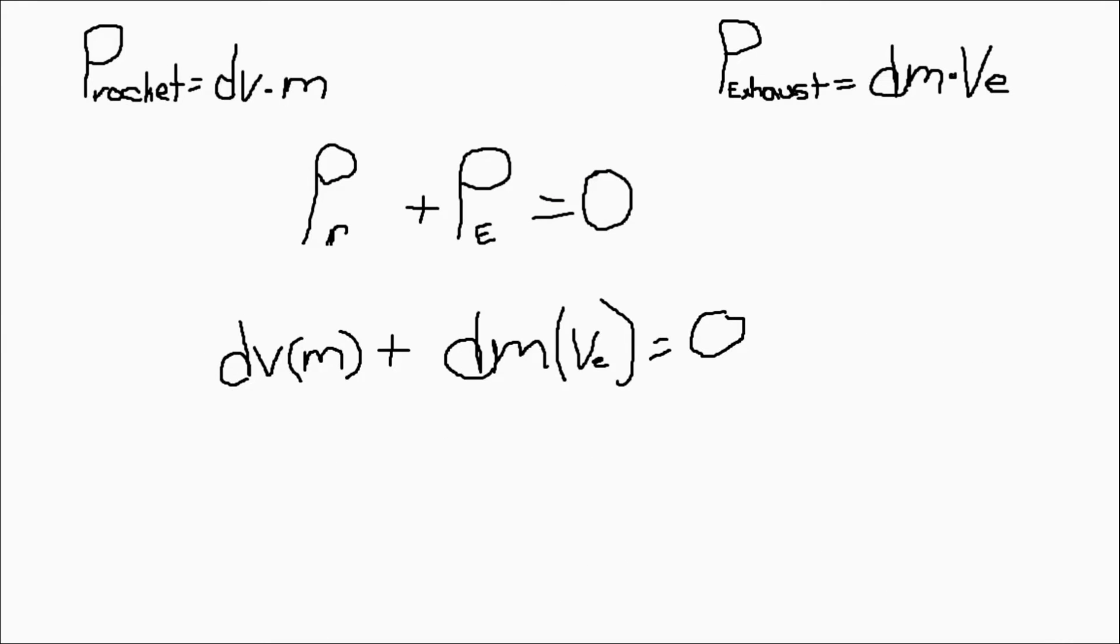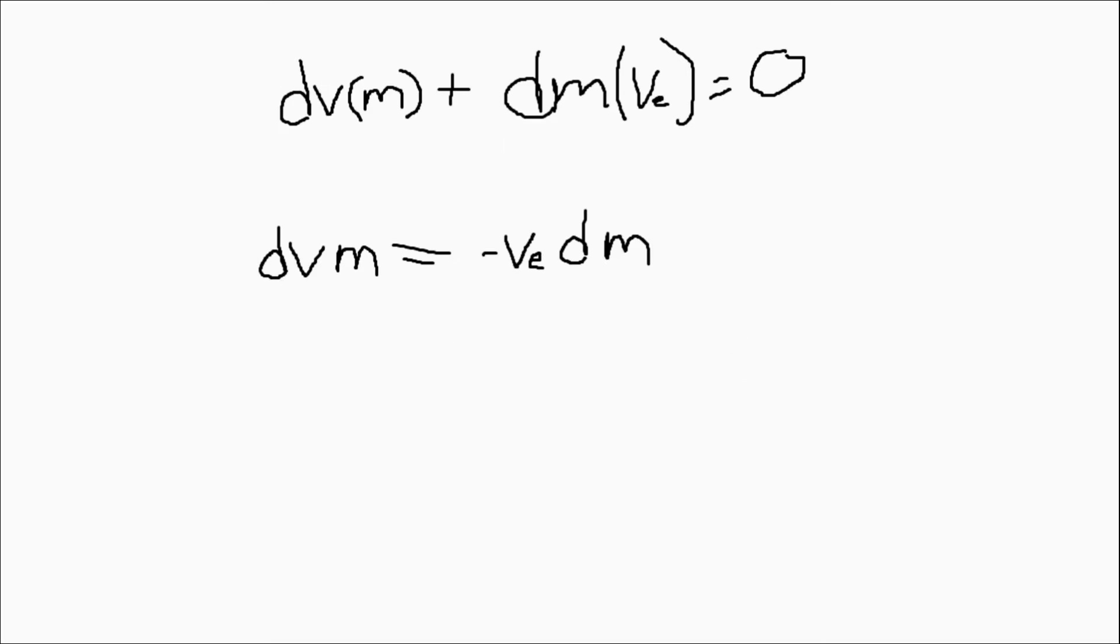Now is where the fun really starts. If we replace the variables for each momentum, we can see that they add to zero. Now, all we need to do is solve for delta V. First, we can just subtract the right side of the equation, so now we have dV times the mass of the rocket is equal to the negative velocity of the exhaust and the mass of the exhaust.